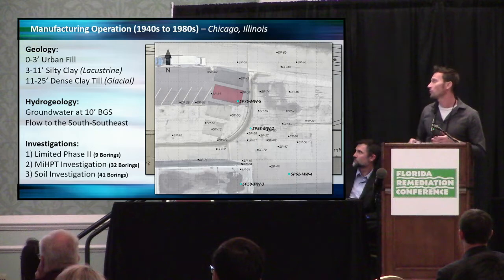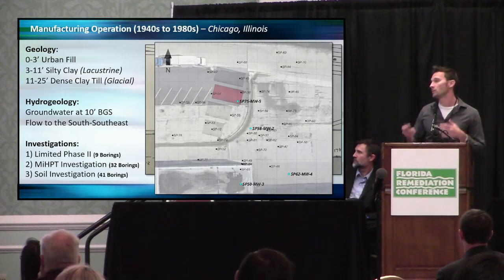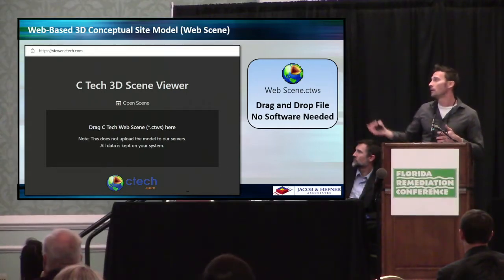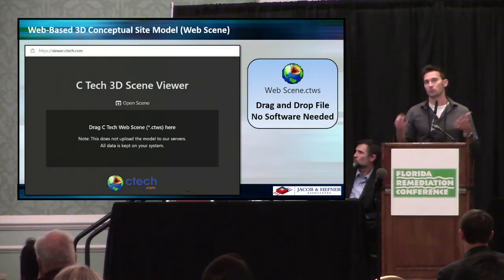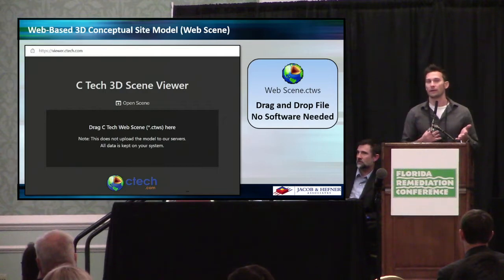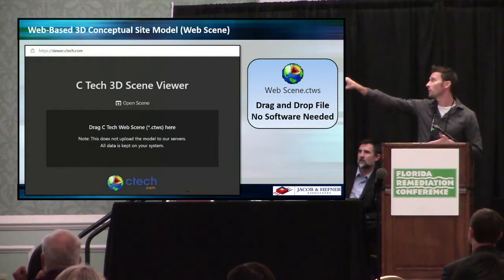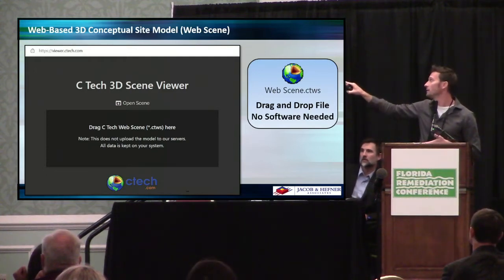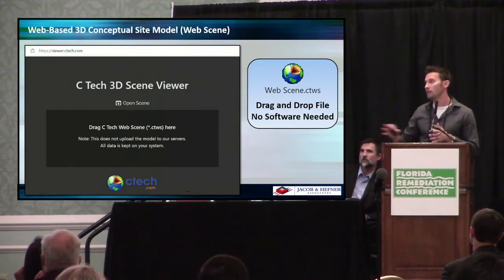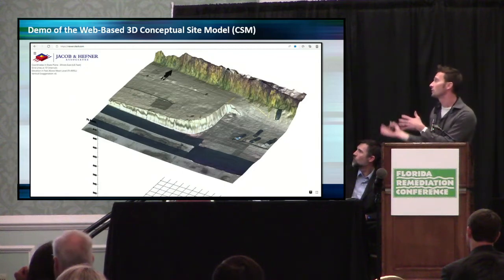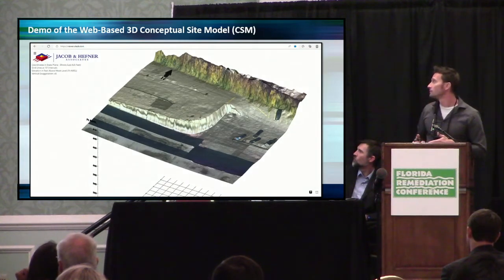We had over 100 soil samples from those 41 borings. The best way to look at this data is to build a 3D conceptual site model and deliver it as a web scene — probably one of the biggest advancements in the last few years. Previously using EVS by CTEC, you'd build a 4DIM and give it to the client, but some clients weren't even opening them because they couldn't or wouldn't install the required software. That's all changed now. You can build 3D web scenes and just go to the website, drag and drop the CTWS file, and without any additional software, rotate, zoom in and out, and turn off various components in the model.